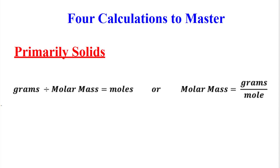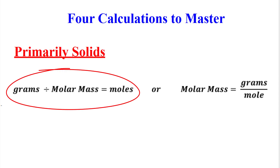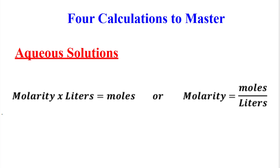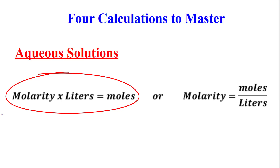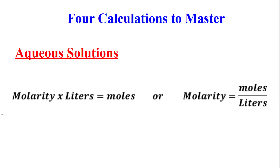Primarily for solids, if you see grams, divide by molar mass to get into moles. So if you see a solid and you see grams, before you do anything, divide by molar mass to get into moles. If you have an aqueous solution and you see molarity — that big M — you want to multiply that by the number of liters, and that gets us into moles. Any aqueous solution: you see molarity, you see liters, multiply them to get into moles.